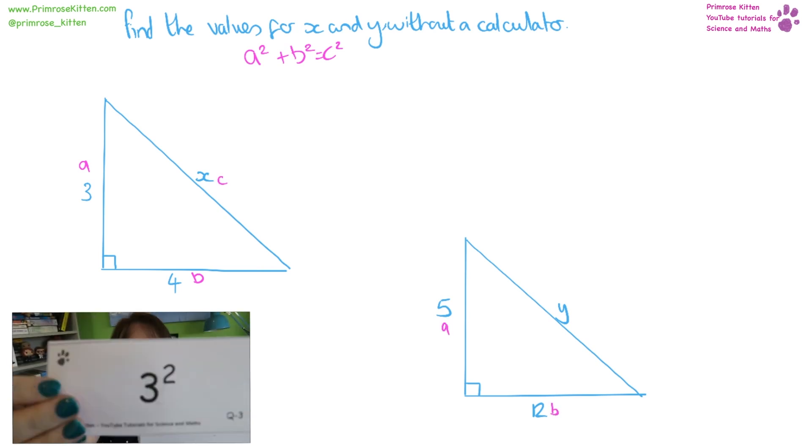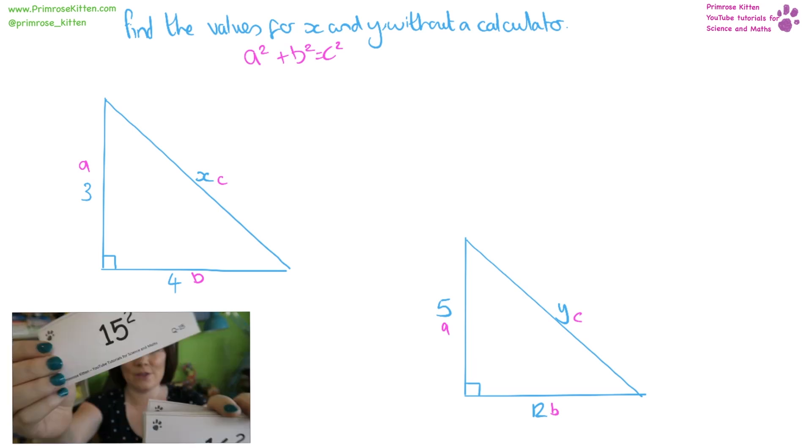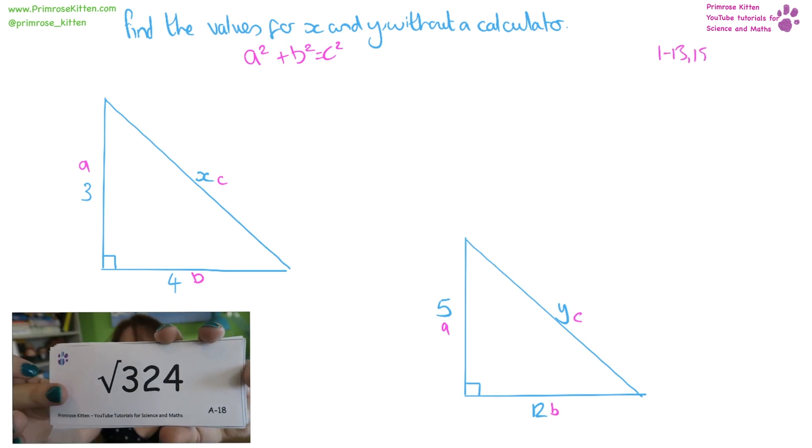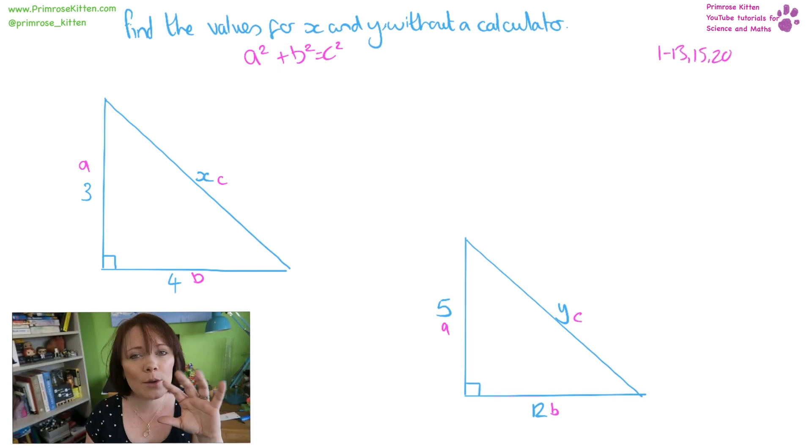a, b, c. Now this is without a calculator because I expect you to know all of your square numbers 1 to 13, 15 and 20 as a minimum.